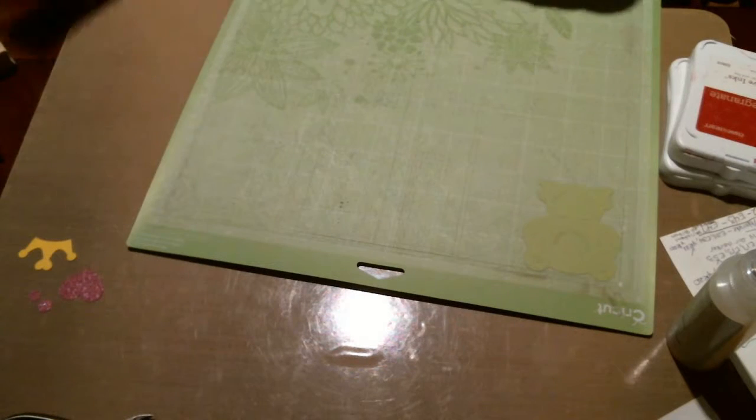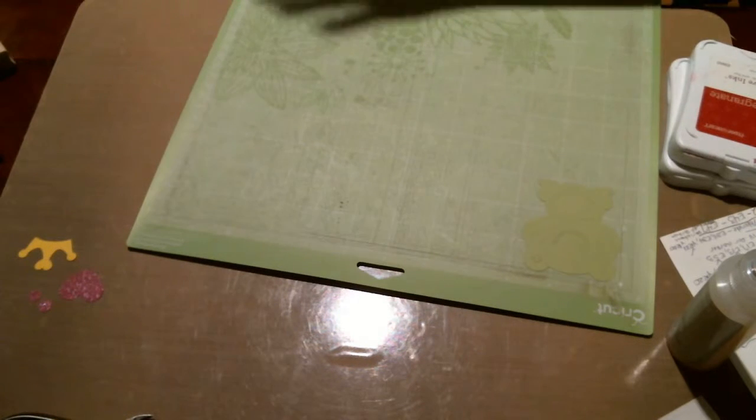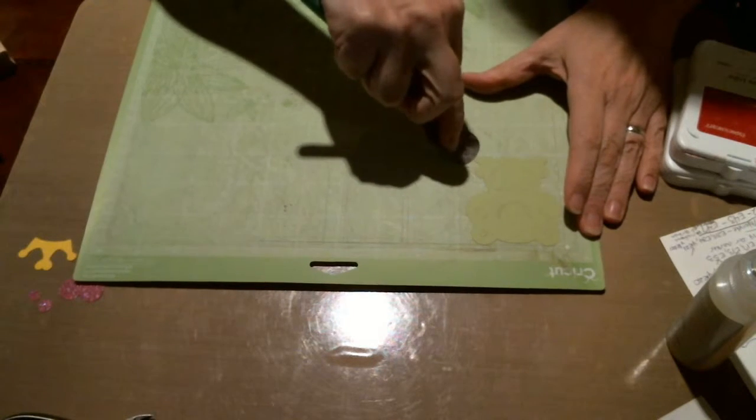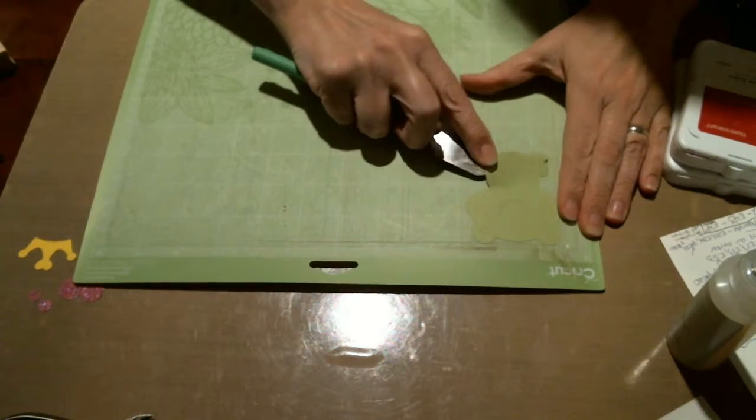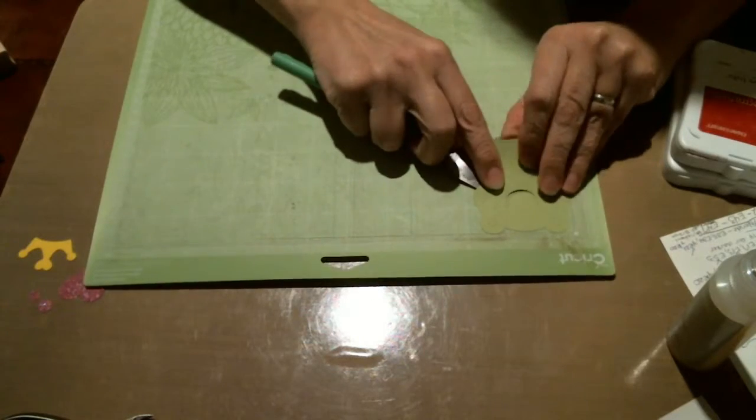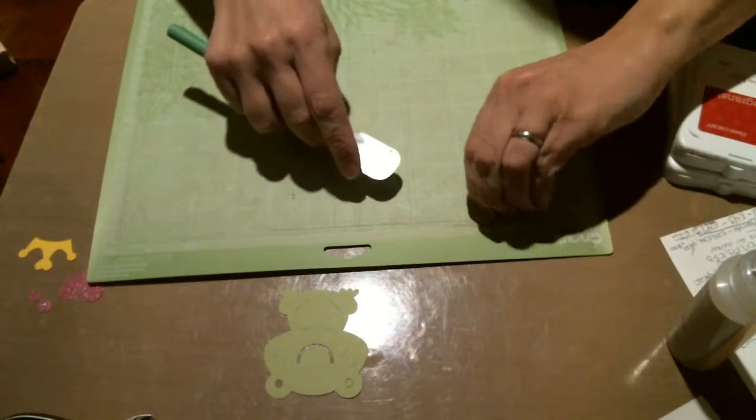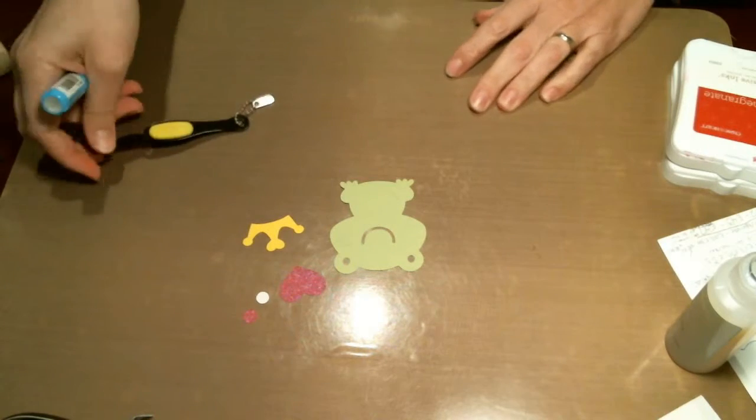As you see, I'm just peeling up all the pieces from my Cricut mat. If you turn everything the same color in the Design Space software, then you can place the different things around one mat and only use one mat versus having to use three different mats.